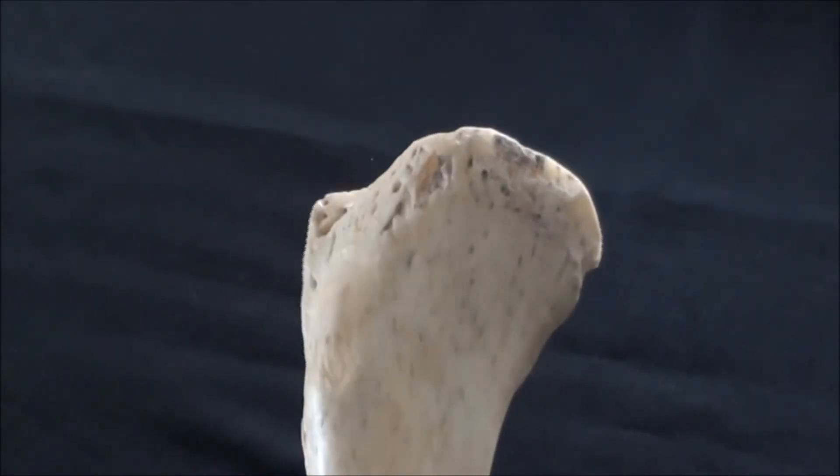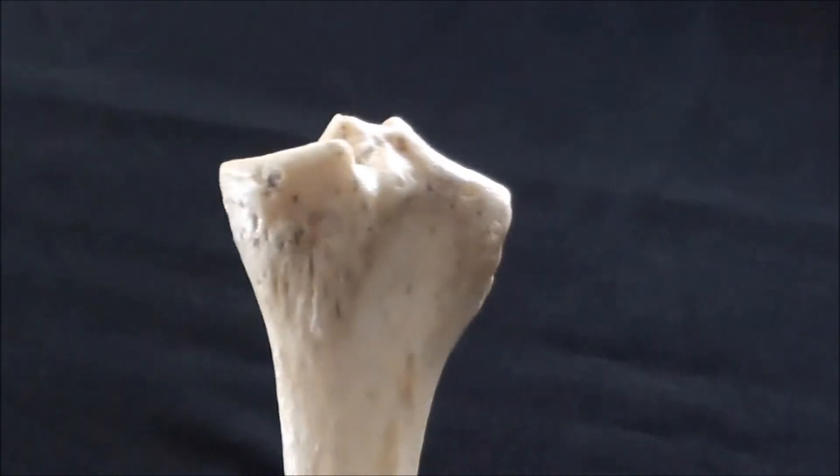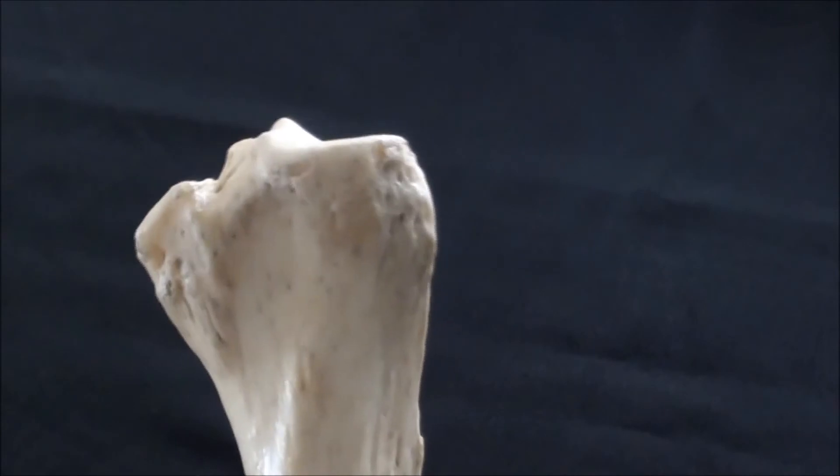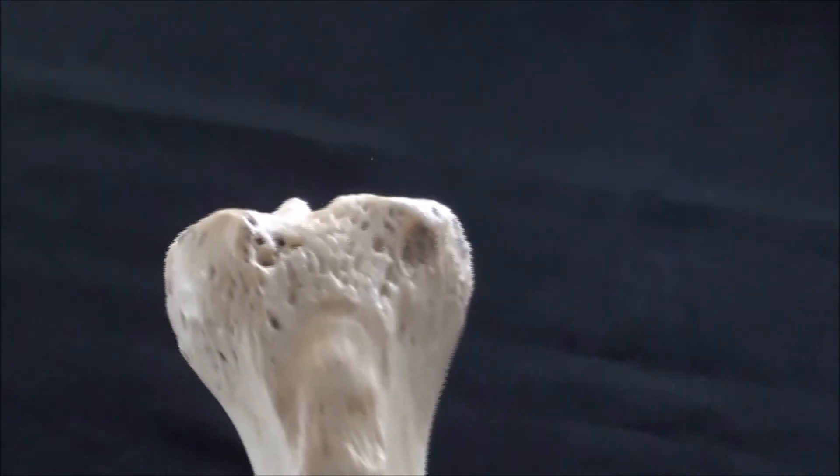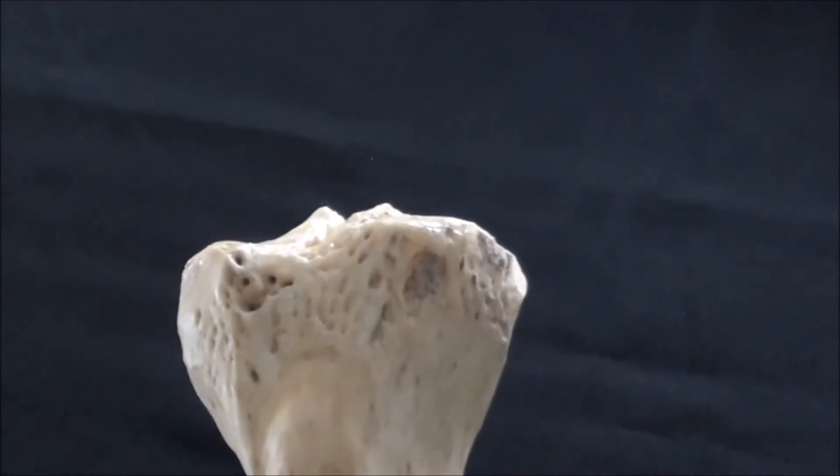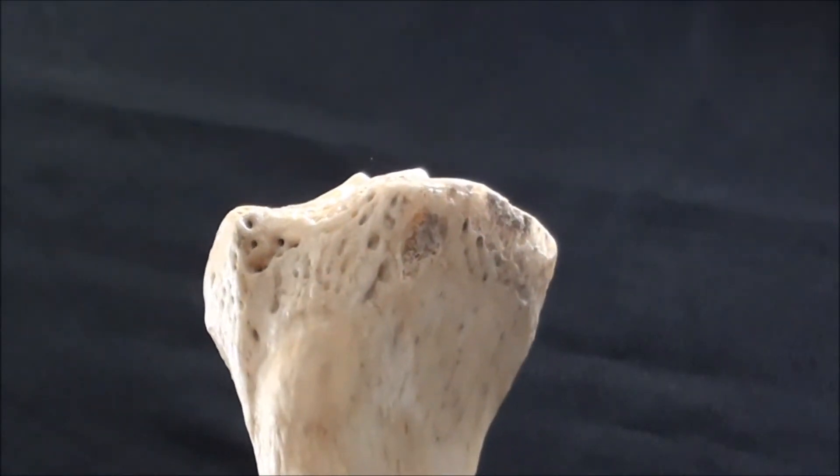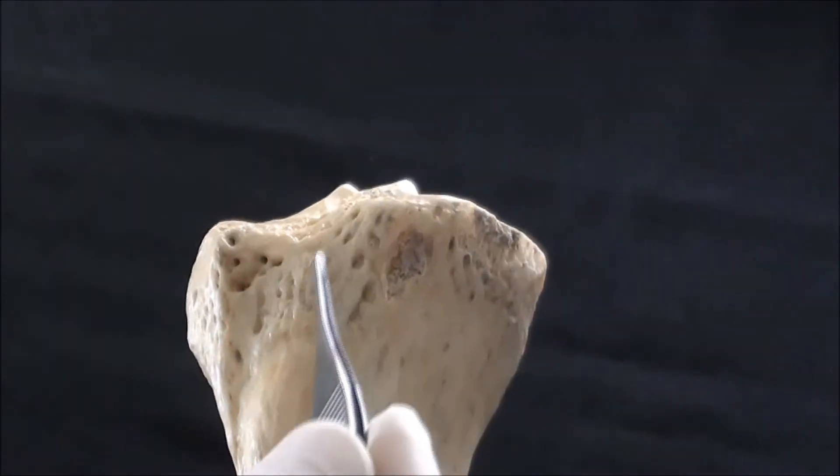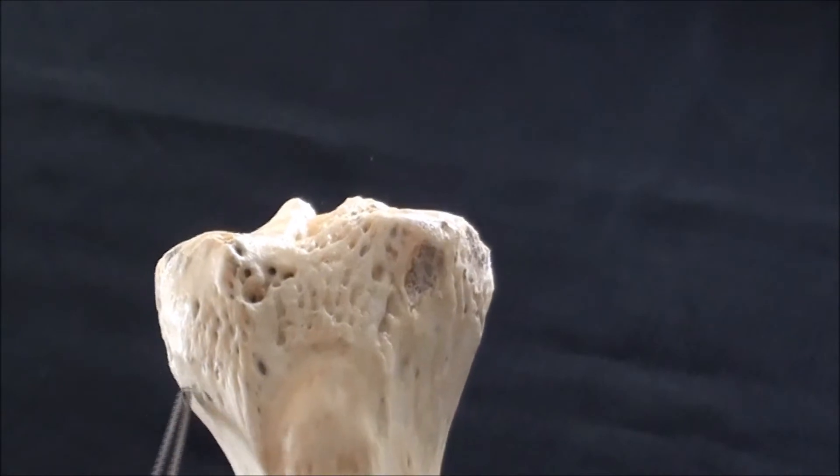Let us start with the proximal tibia first. I want to show the bone as we rotate it 360 degrees in order to get a better idea about its expanded proximal end. When we describe the tibia, we prefer to say that it is proximally composed of two condyles: the medial condyle of the tibia and the lateral condyle of the tibia.